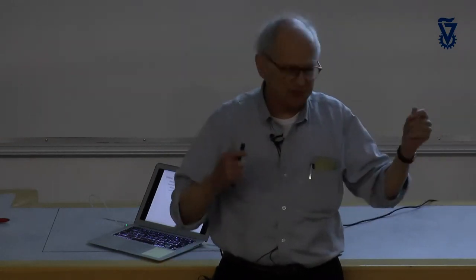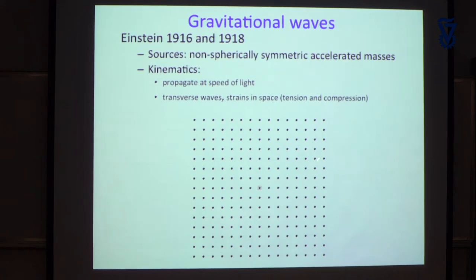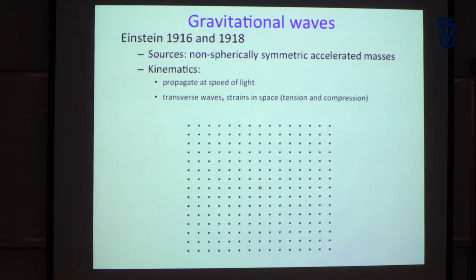Spherically symmetric accelerations of systems do not radiate, but things like an orbiting object — that's not spherically symmetric — do radiate. Two things that are colliding also radiate. Here's a little animation: that red square is where you're standing, and this set of dots represents very light masses sprinkled into space. The gravitational wave is either going into this picture or coming out of it.